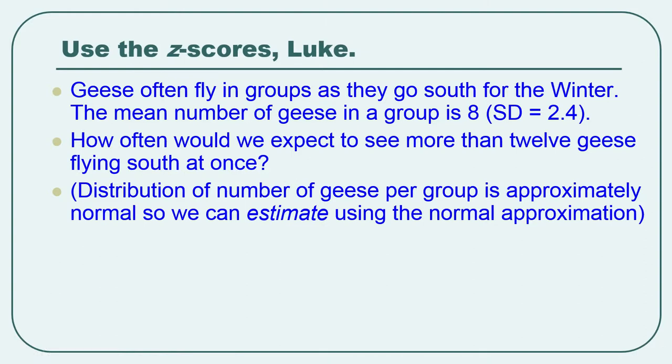So here's an example. Geese flying in groups as they go south for the winter sometimes. Let's say the mean number of geese in a group is 8 with a standard deviation of 2.4. So I've just made a statement that's kind of vague which means it's probably about a population. So let's assume that's a population. How often would we expect to see more than 12 geese flying south at once?